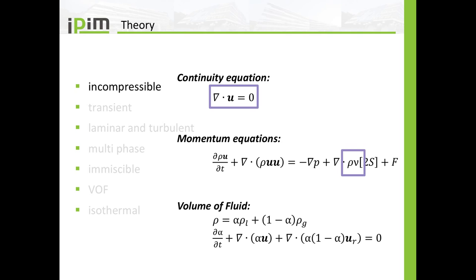We will use the volume of fluid method and the solver is isothermal. As for the equations being solved, the continuity equation reduces to a simple equation because we are assuming incompressible flow — the divergence of the velocity field is zero. In the momentum equations, we could divide by the constant density and end up with density in the pressure gradient term, but this is not done in this solver. Rather, the constant density remains in the partial time derivative, in the convection, and in the diffusion term.